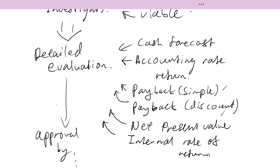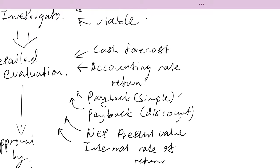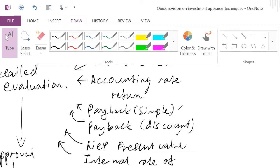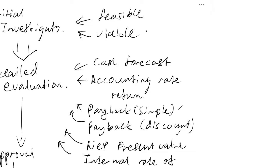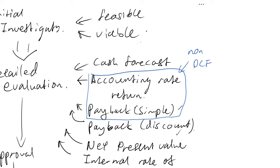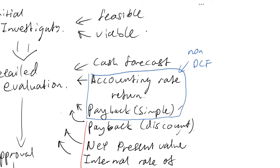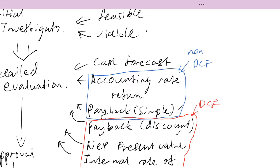These methods are of two types. The first group is known as the non-discounted cash flow methods — the accounting rate of return and the simple payback fall into this category. The second group, including the discounted payback, the net present value method, and the internal rate of return, are known as the discounted cash flow techniques.